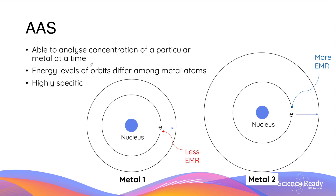Besides being very sensitive, another advantage of AAS is that it is able to analyse the concentration of a particular metal at a given time, even when there are multiple metals present in a sample. This is because the amount of EMR absorbed by metals is determined by the energy difference between orbits in the metal's atomic structure. Since every metal atom has a different structure — for example atomic radius, as shown by these two metal atoms — the amount of energy of EMR absorbed varies. Therefore AAS also provides highly specific analysis of a sample containing more than one metal species.